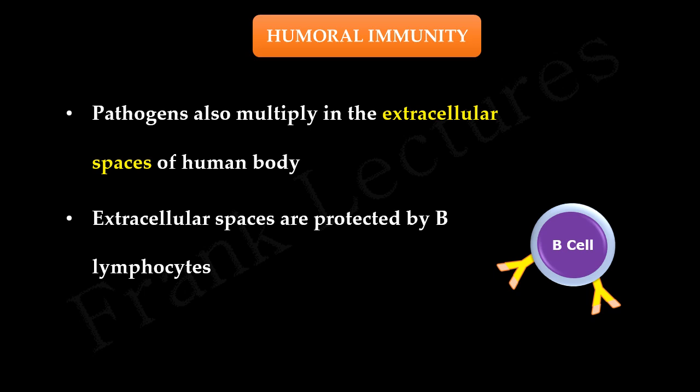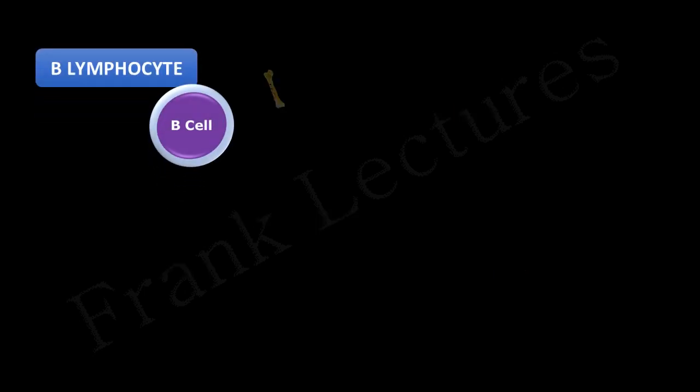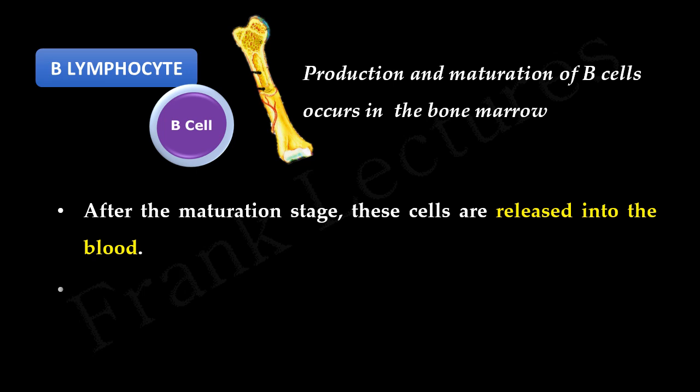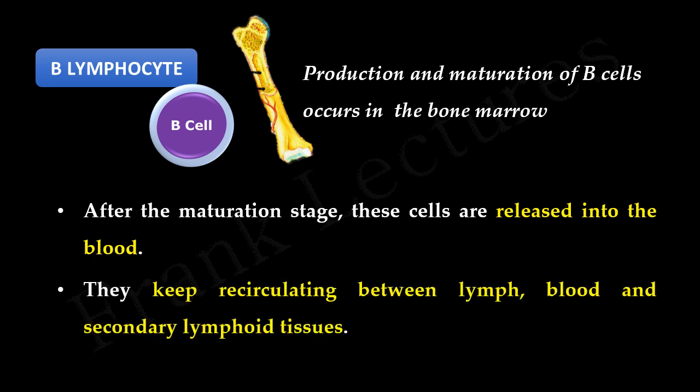In this video lecture, we will understand role of B-lymphocytes and the basic structure of antibody. B-lymphocytes originate in bone marrow, and they also complete their maturation in the bone marrow. After the maturation stage, these cells are released into the blood. They keep recirculating between lymph, blood and secondary lymphoid tissues. When these mature B-cells recognize specific antigens, they get activated.